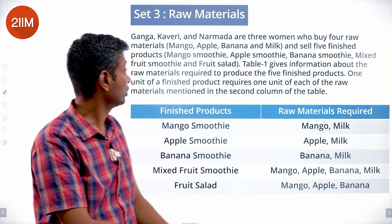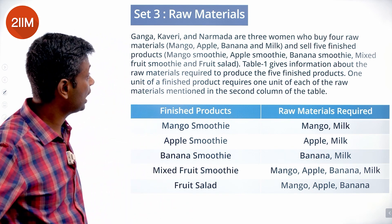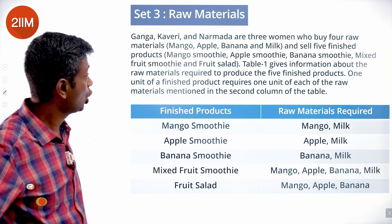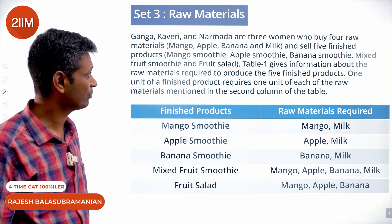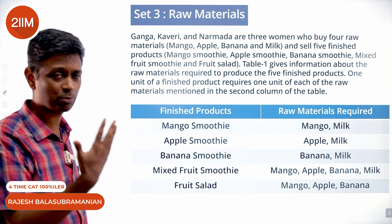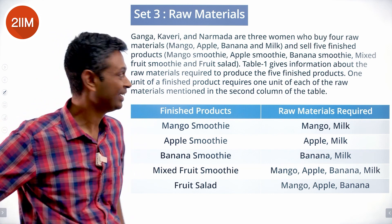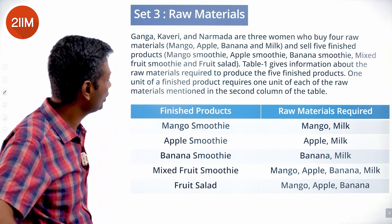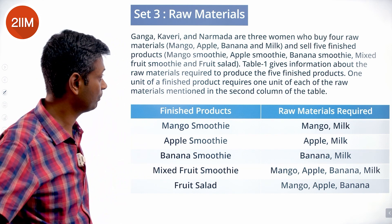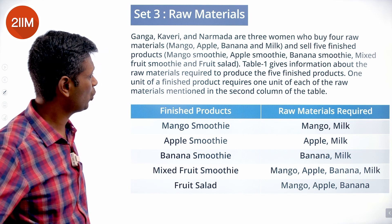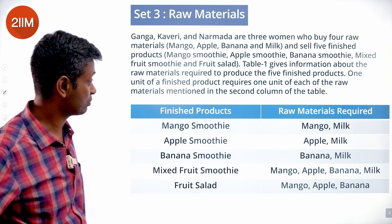Raw materials. Let's have a look at this. Ganga, Kaveri and Narmada are three women who buy four raw materials — mango, apple, banana and milk — and sell five finished products: mango smoothie, apple smoothie, banana smoothie, mixed fruit smoothie and fruit salad. Table 1 gives information about the raw materials required to produce the five finished products.